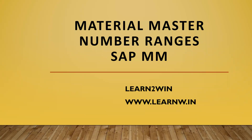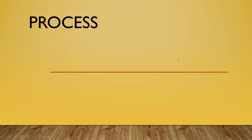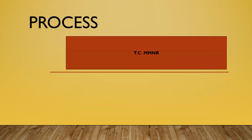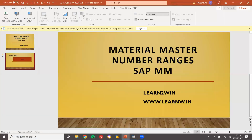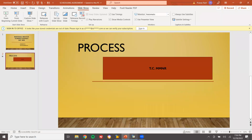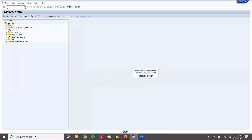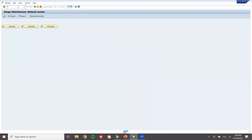Hello everybody, Swaminath here. Today we are going to see material master number ranges — how to set number ranges to the material master. The transaction code is MMNR. We can go to MMNR directly, or I'll show you the SPRO path. MMNR is the transaction code.